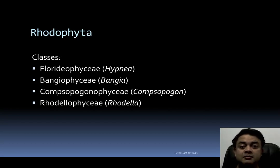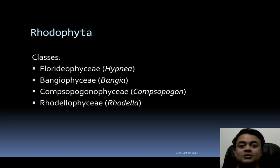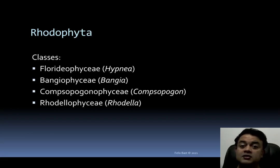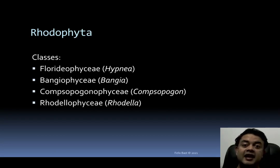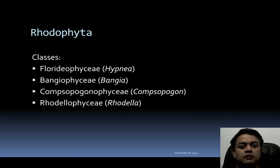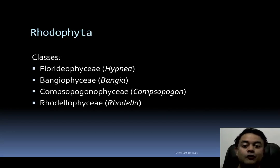The lab has been working on red algae systematics and recently discovered two new species of Hypnea — Hypnea bullata and Hypnea indicum — with publication expected in Botanica Marina. Hypnea is important commercially as a carrageenophyte, meaning carrageenan can be harvested from it. The major classes of Rhodophyta are Florideophyceae, Bangiophyceae, Compsopogonophyceae, and Rhodellophyceae.